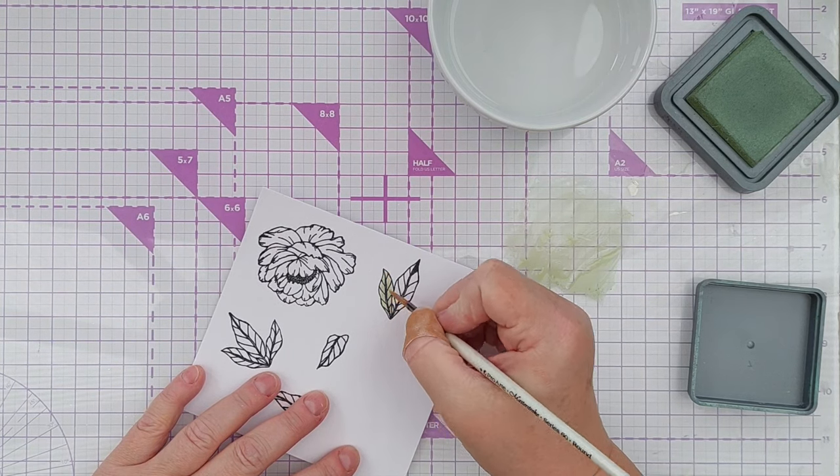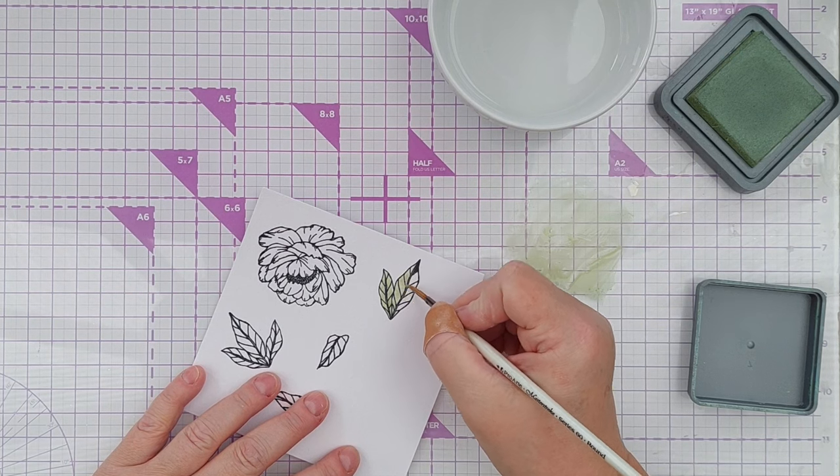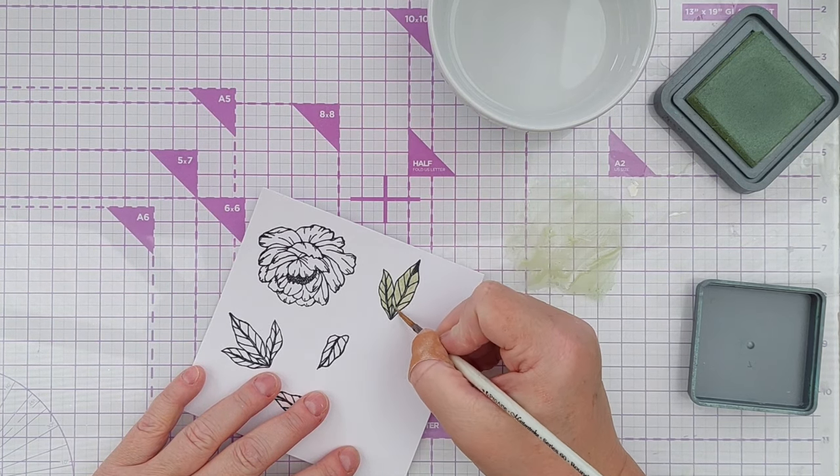I used a paintbrush to add a bit of water to turn it into a paint, and then painted the Bundled Sage on the leaves.